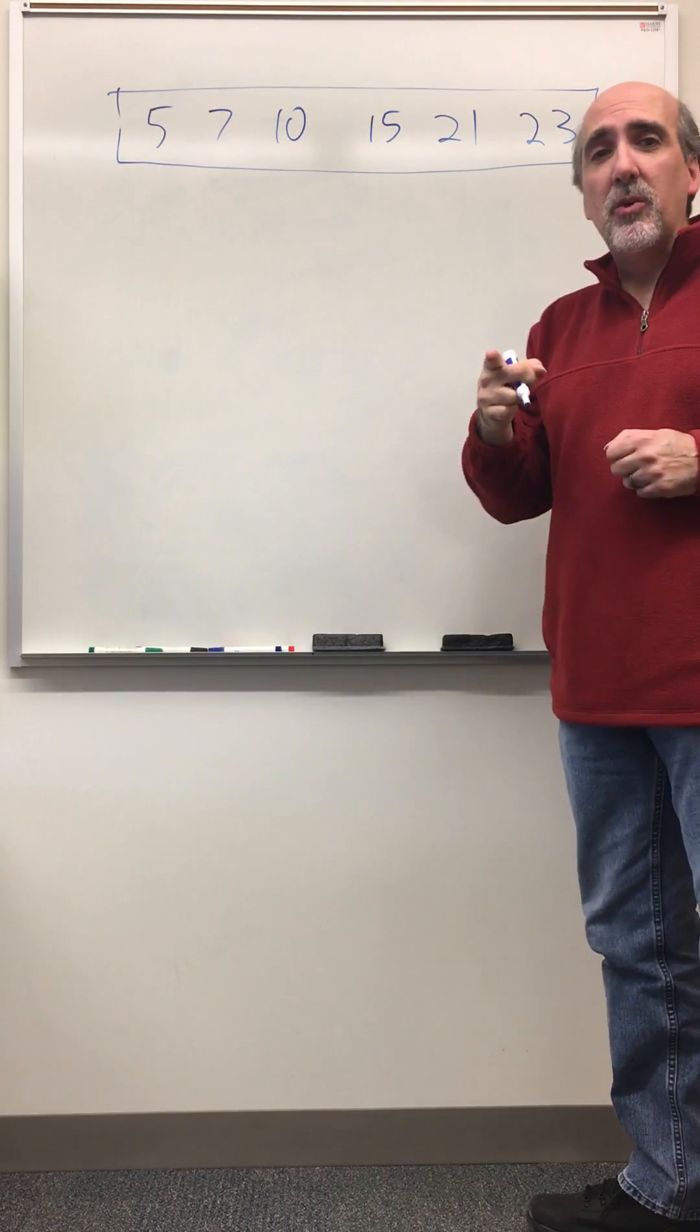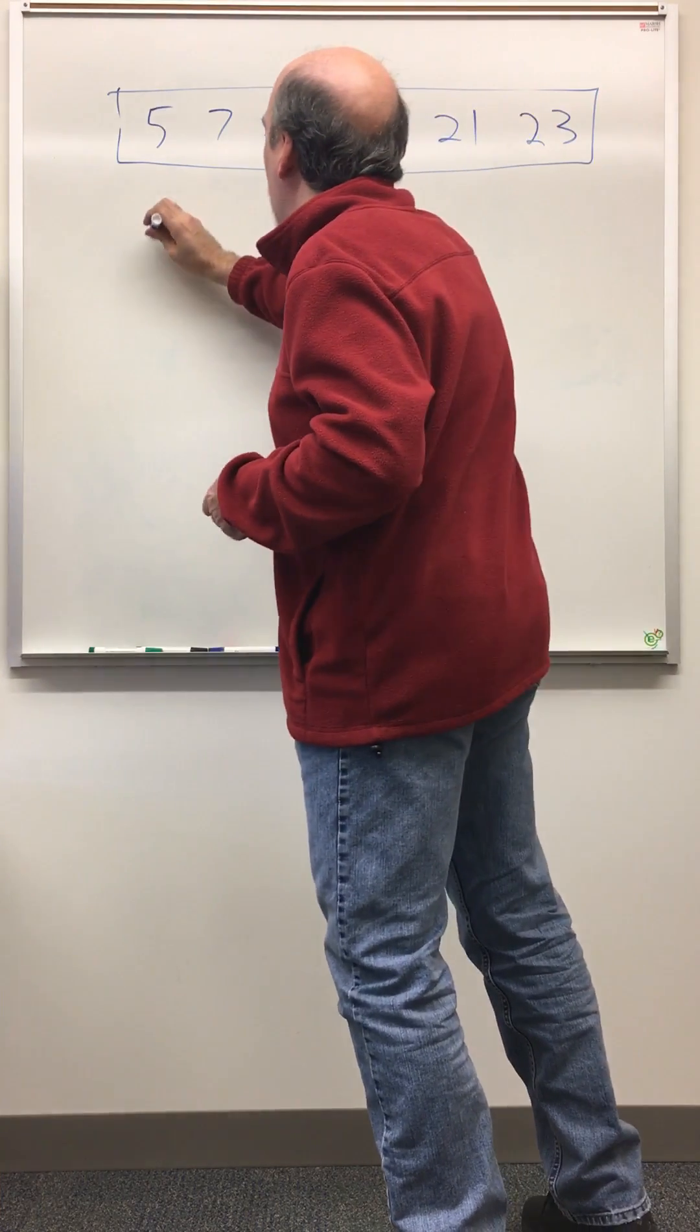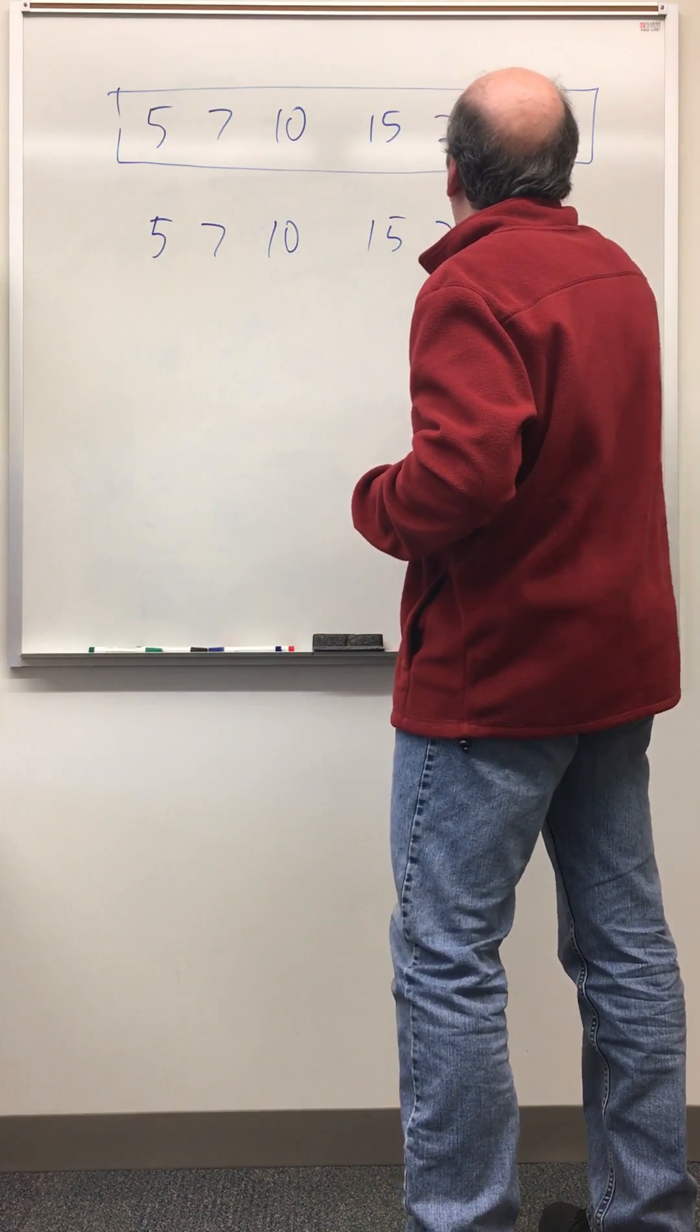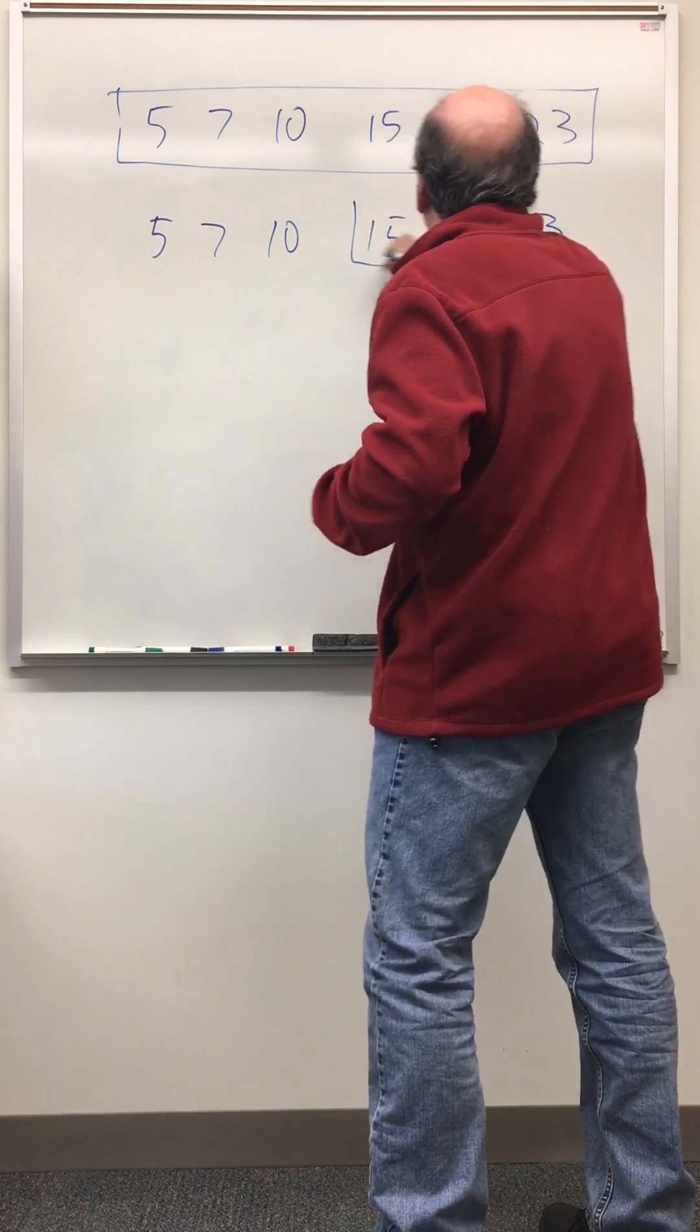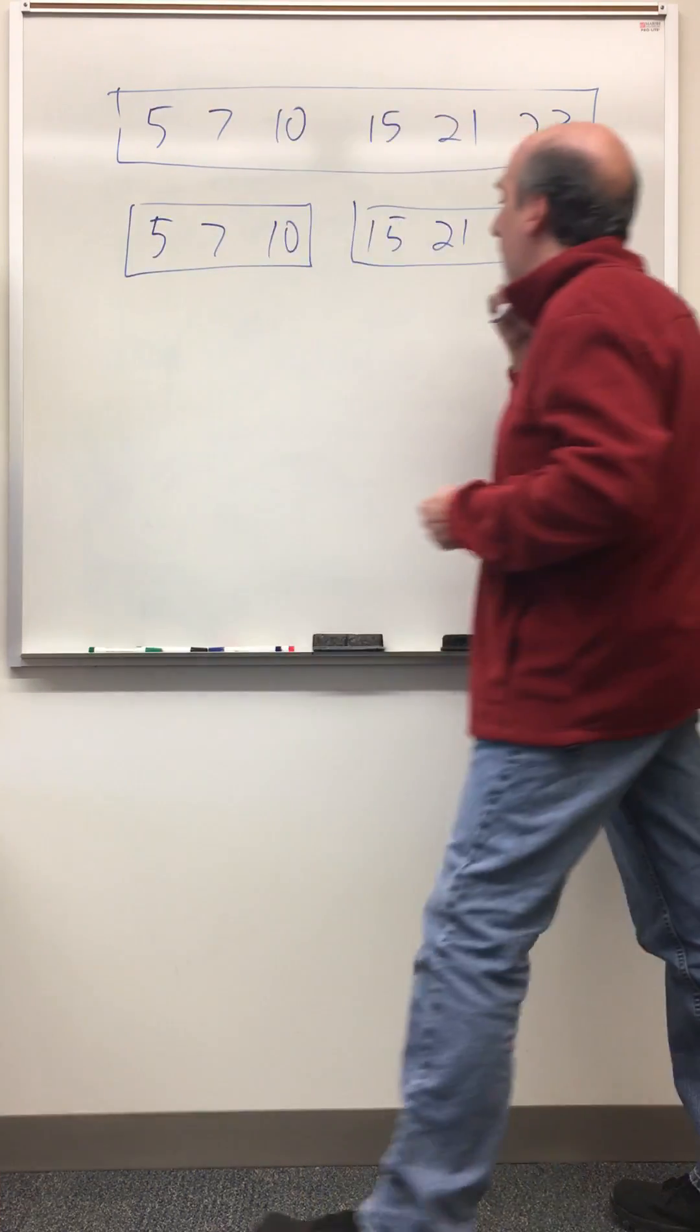Well, one thing we could do is we could say, hey, how about if instead of having one big vector, let's make two smaller vectors. 5, 7, 10, 15, 21, 23. So I'll take the big sorted vector and the little sorted vector.